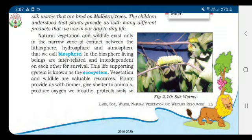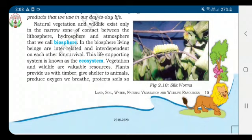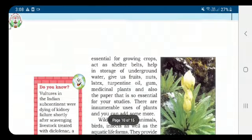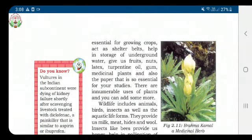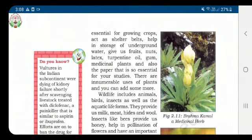Today we are going to see the uses of plants. Plants provide us with timber, give shelter to animals, produce oxygen we breathe, protect soil, and are essential for growing crops. Plants also act as shelter belts — in coastal regions and dry regions, rows of trees are planted to check wind movement and protect soil cover.